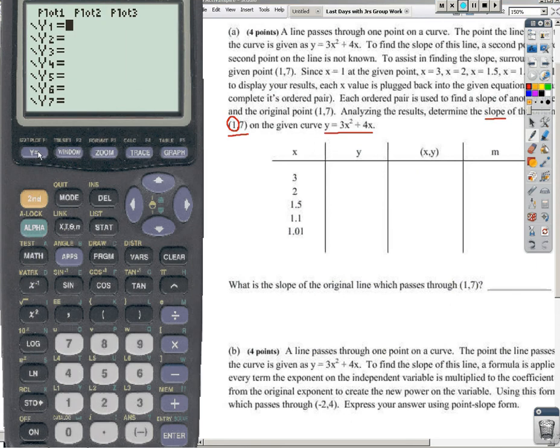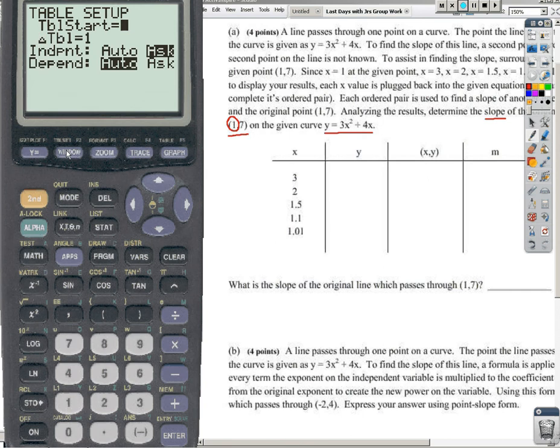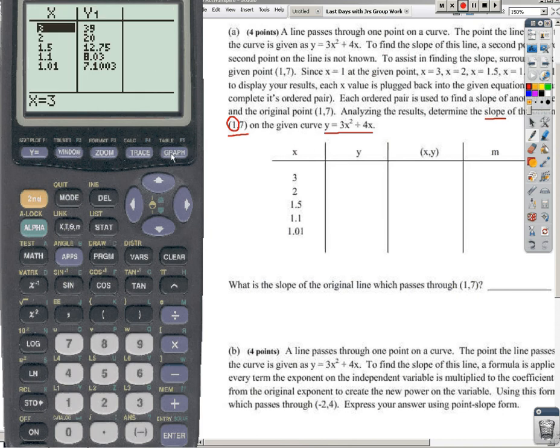And for y equals, plug in your function, and now make sure that your table, so second window, your table setup, has the independent variable on ask. In this case, mine does. If yours doesn't, go over, highlight it, hit enter. Then go to your table, hit second graph. On the table, go ahead and plug in these values.